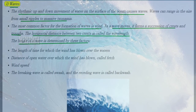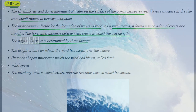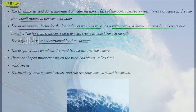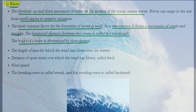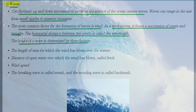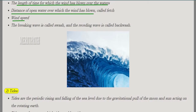The first type is waves. The rhythmic up and down movement of water on the surface of the ocean causes waves, which range from small ripples to massive tsunamis. The common factor for wave formation is wind. As a wave moves, it forms a succession of crests and troughs. The horizontal distance between two crests is known as the wavelength. The height of the wave is determined by three factors: the length of time the wind has blown over the water, the distance of open water over which the wind has blown (known as fetch), and wind speed. The breaking wave is known as swash, and the receding wave is known as backwash.